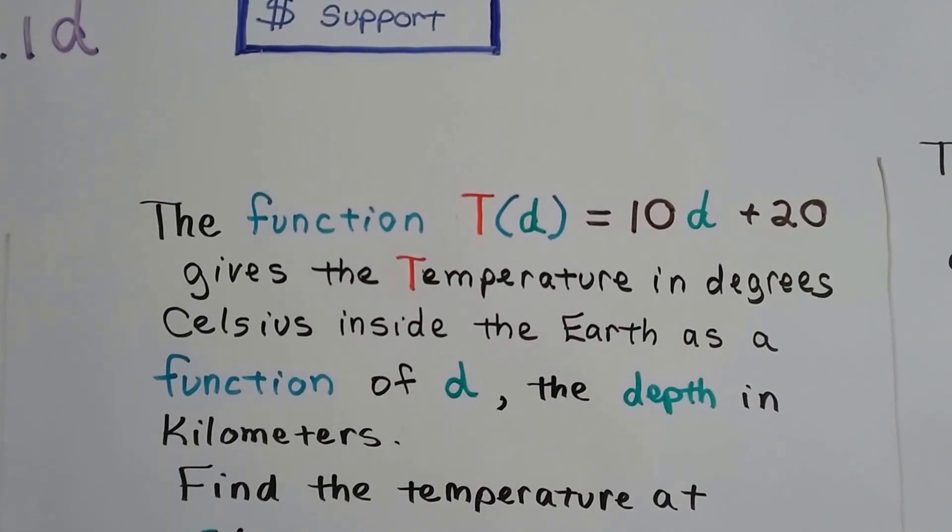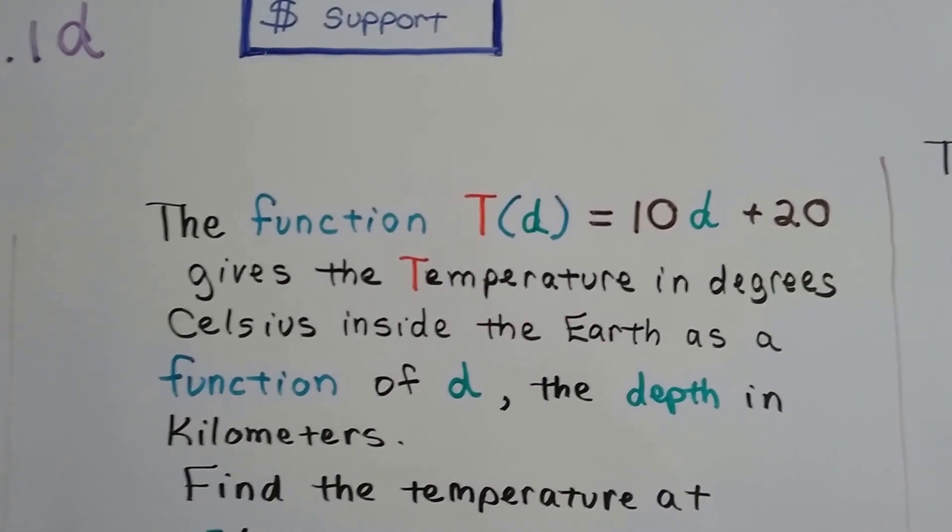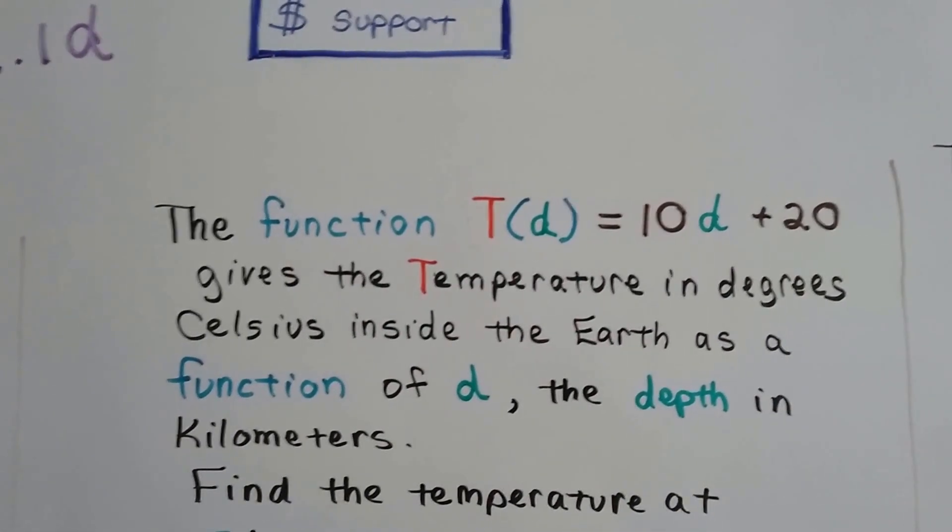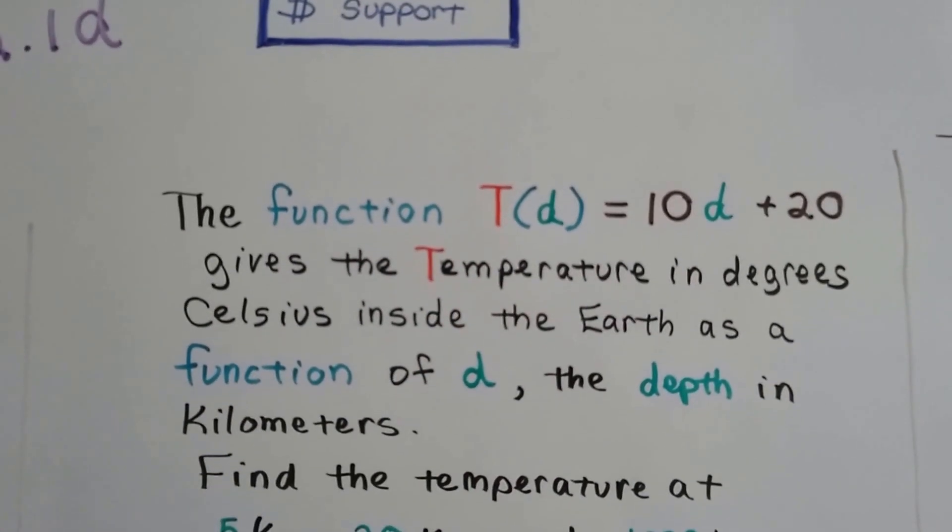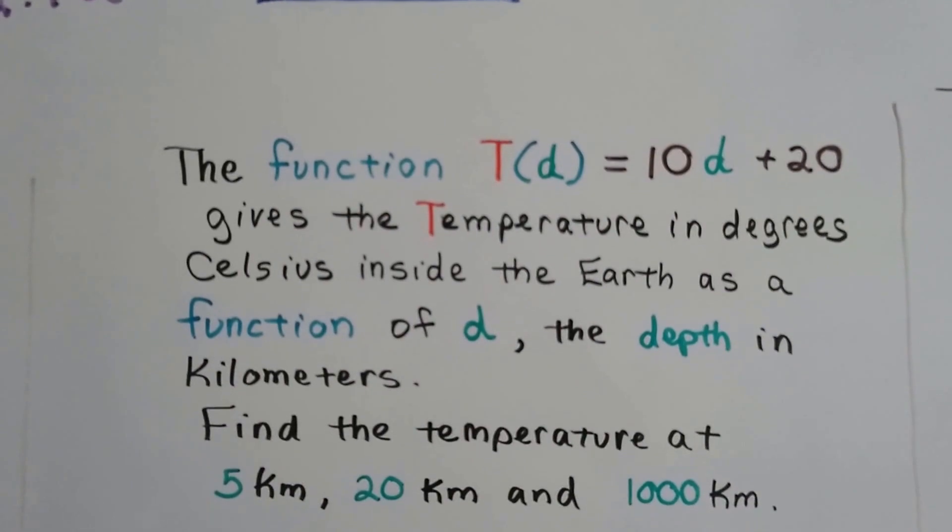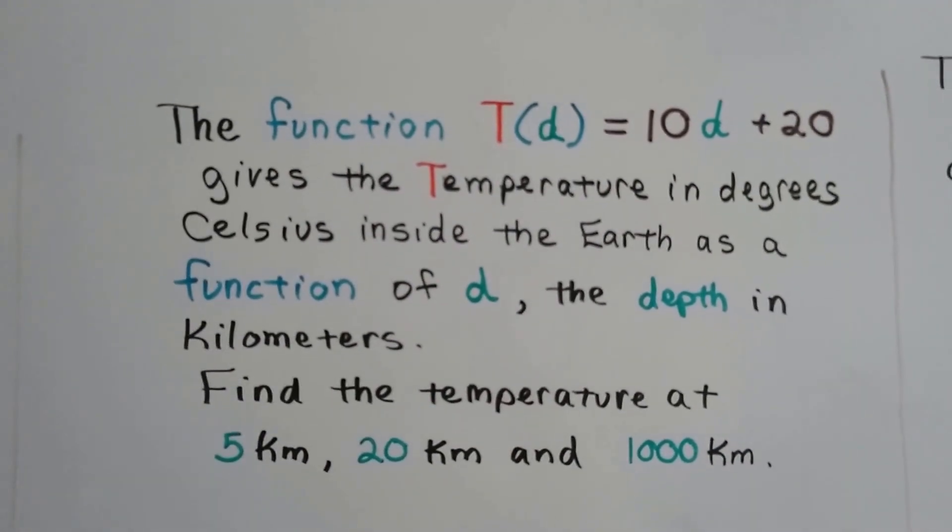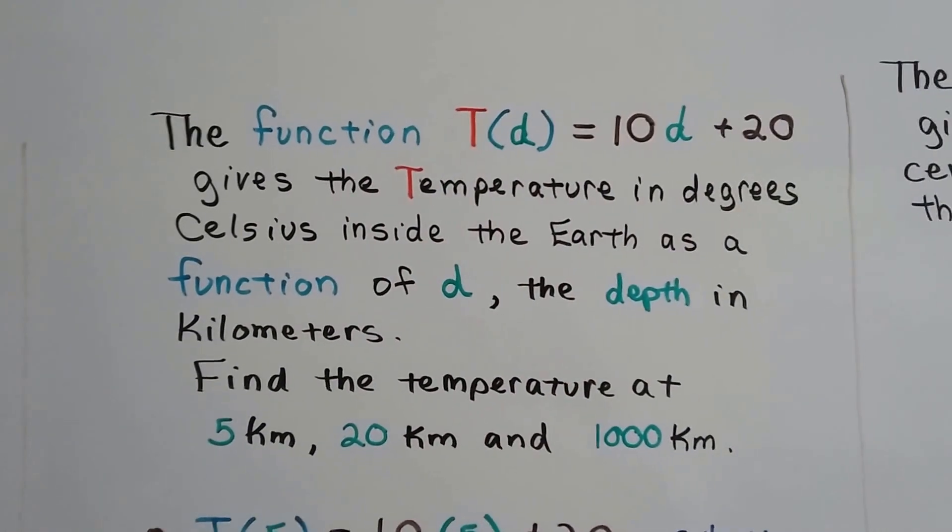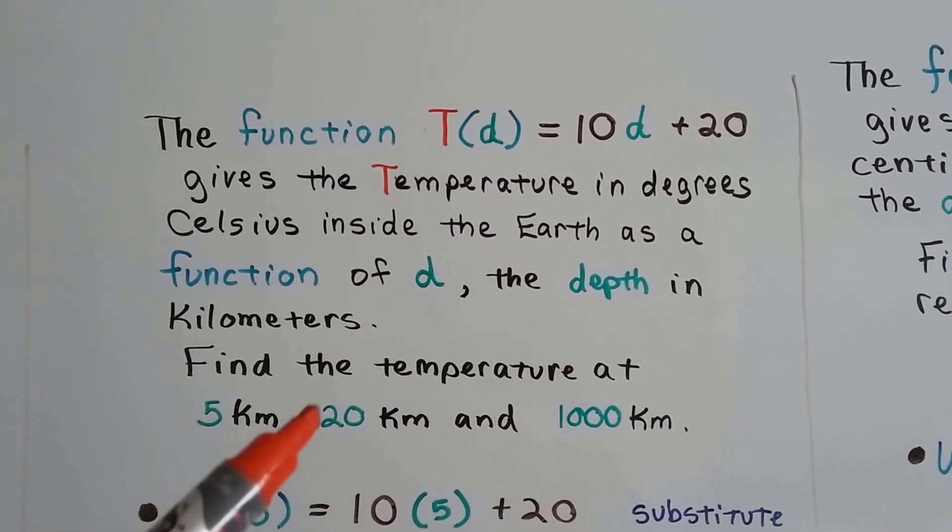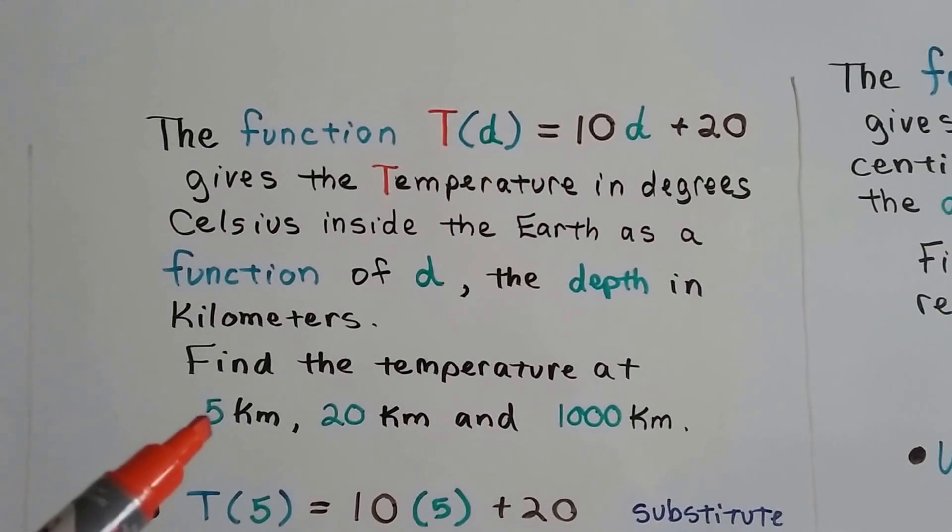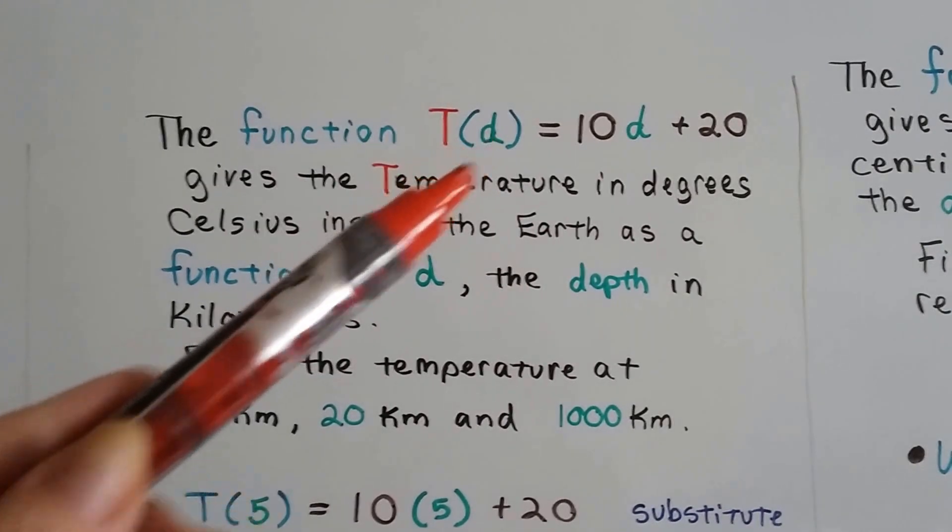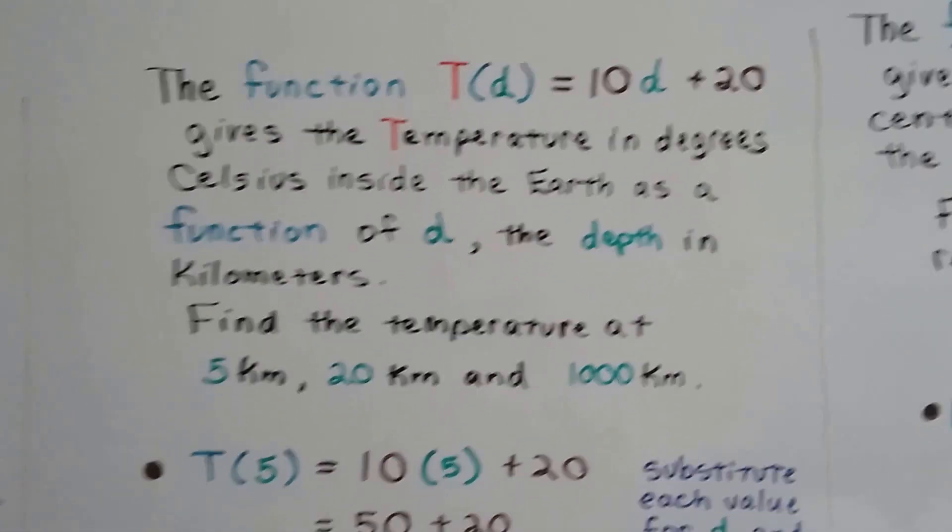If you're wondering why it doesn't say f(x) all the time, it's because they can plug in other variables just like we do in algebra. To find the temperature at 5 kilometers, 20 kilometers, and 1,000 kilometers, we just plug in these values. It's three different problems. We plug in value 5 into this equation for d and solve it.